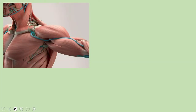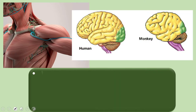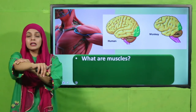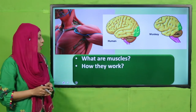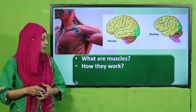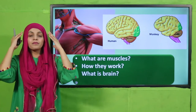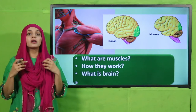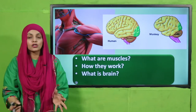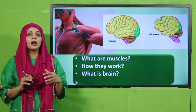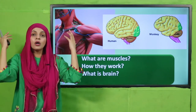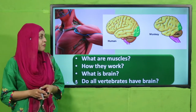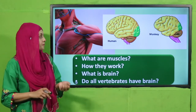Now let's move forward to an activity. Looking at the pictures of muscles and brain — muscles are the fleshy parts covering the bones, and they help us in movement. The brain is the central controlling part of the body; it controls all the actions of your body, both those you are aware of and those you are not. All vertebrates have a brain.